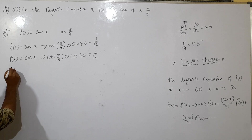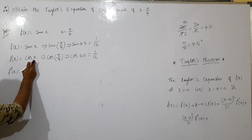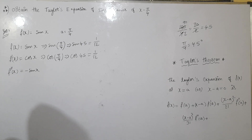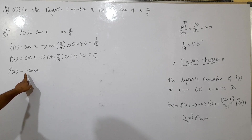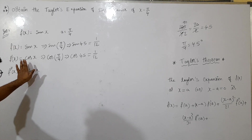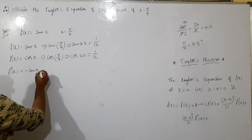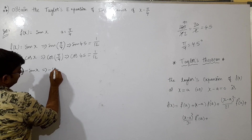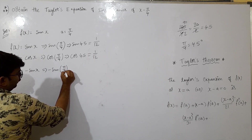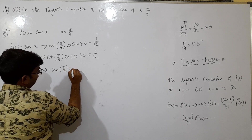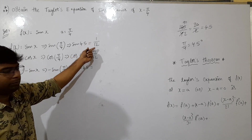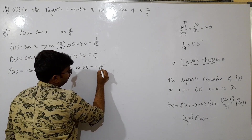Second derivation — the second derivative of cos x is equal to minus sin x. Now, minus sin 45 is equal to minus sin pi by 4. So, minus 1 by root 2 is our answer.